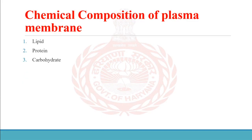As per the fluid mosaic model, the plasma membrane is made up of lipid, protein, and carbohydrate. We will discuss each one of these components one by one.